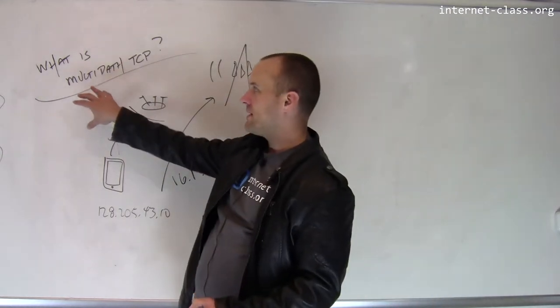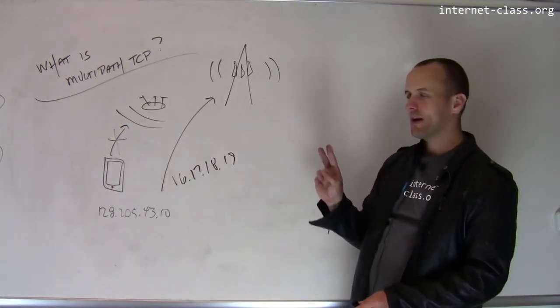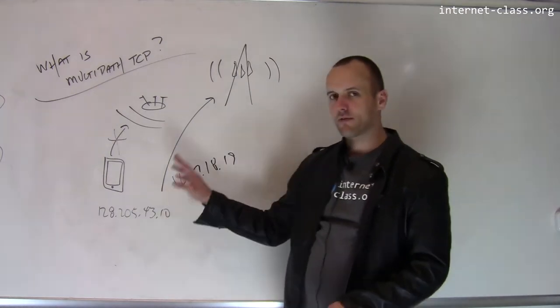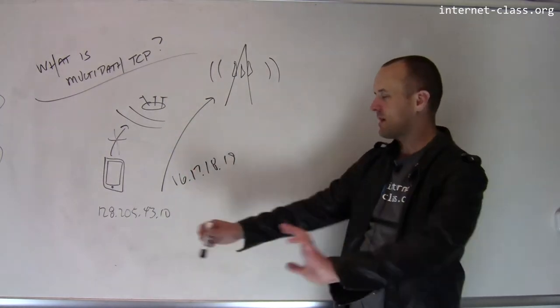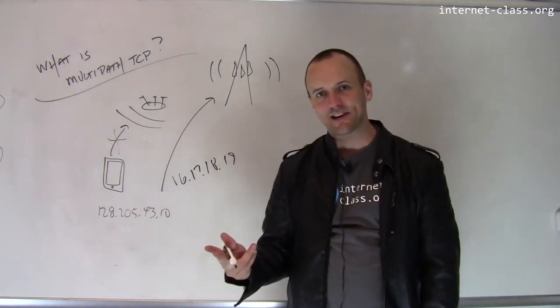So there's something new that's being developed. It's called Multipath TCP. Multipath TCP solves two problems here. One is this roaming problem. The other thing that's interesting about Multipath TCP is it's designed to allow you to combine these connections together.